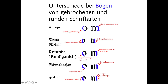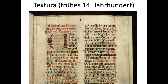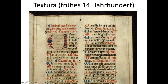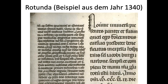Here's an example of Textura — you can see how rectangular it is. If you're not reading texts that old, you don't necessarily need to practice it too much, and the spelling is also quite different — the further back you go, the more different the spelling is. Recognizing spelling changes throughout the centuries is its own skill. Here's Rotunda — you can see how much more rounded it is. This example is from 1340, and some texts are in Latin, which makes it harder to read.